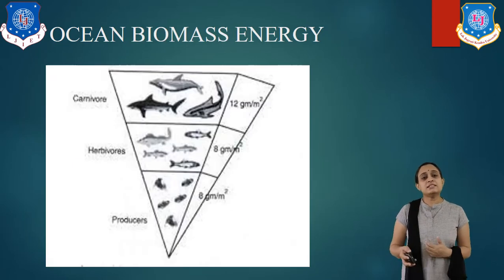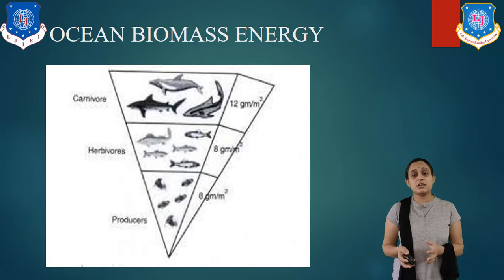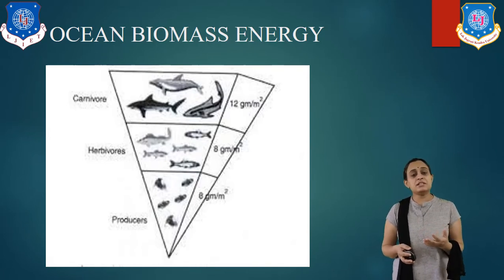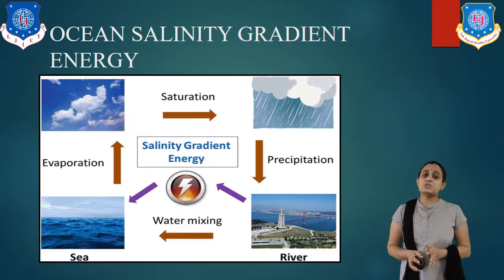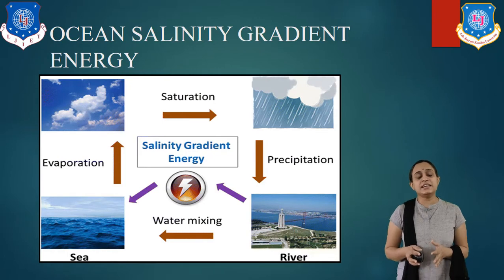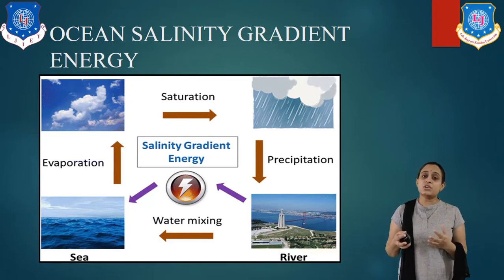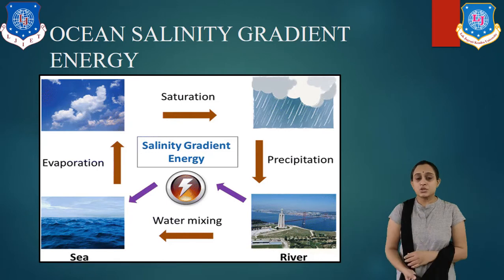Let us see the biomass energy of the ocean. Yes, the ocean also contains a lot of biomass. It refers to the energy contained in organic matter forms in the ocean, like vegetation, marine animals, and microorganisms. Regarding ocean salinity gradient energy, as shown in the diagram, it refers to one type of chemical energy: when saline water is separated from fresh water, an electrical potential is developed between the electrodes.